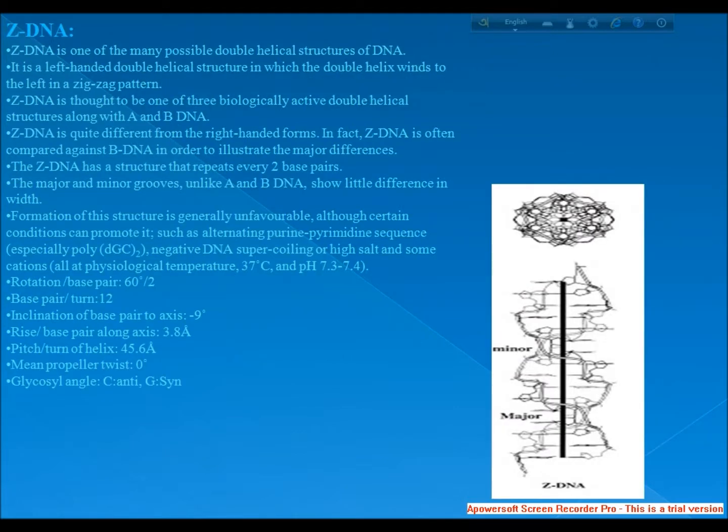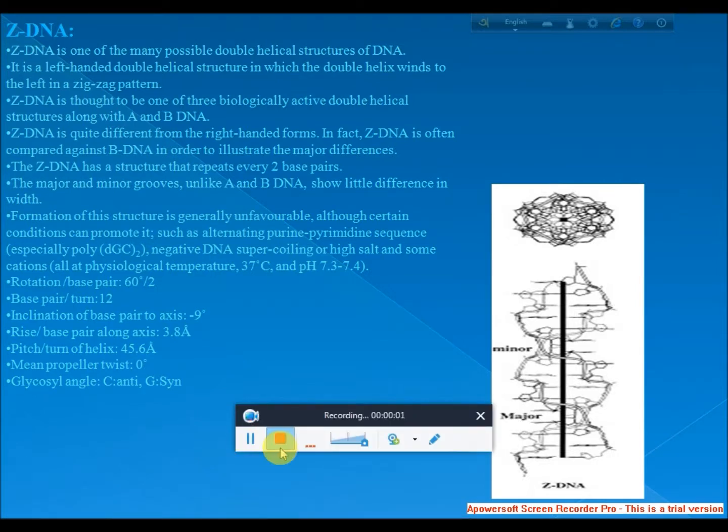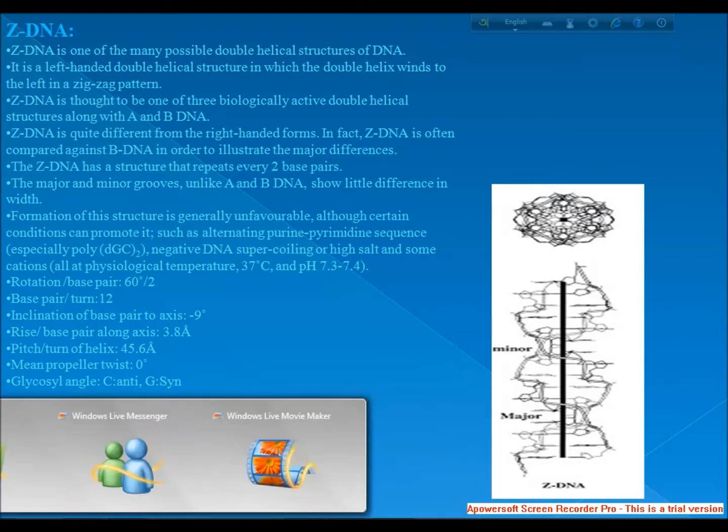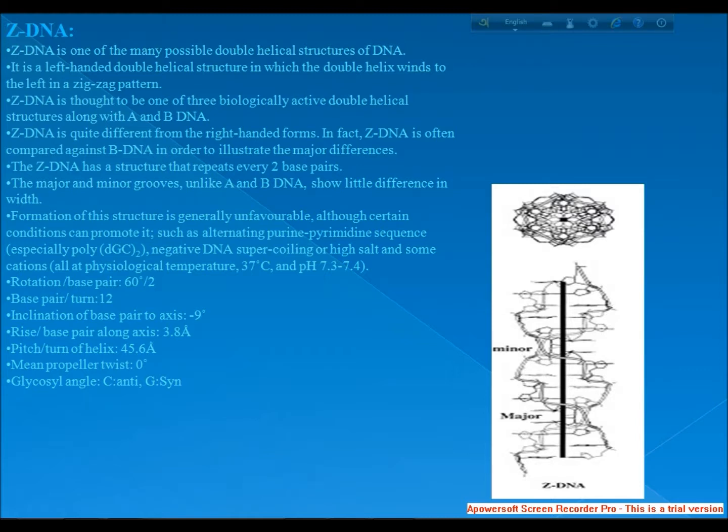Next, I come to Z-DNA. Z-DNA is one of the many possible double helical structures of DNA. It is a left-handed double helical structure in which the double helix winds to the left in a zigzag pattern. Z-DNA is thought to be one of three biologically active double helical structures along with A and B DNA. Z-DNA is quite different from the right-handed forms. In fact, Z-DNA is often compared against B-DNA in order to illustrate the major differences.